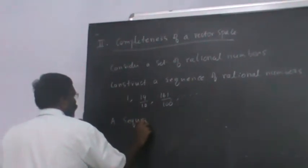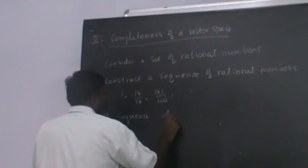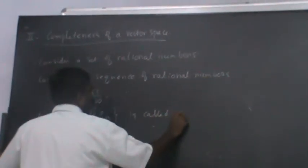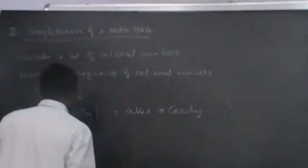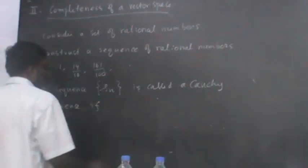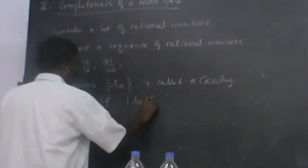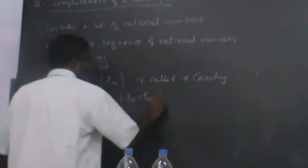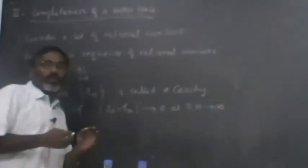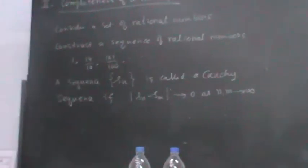Such a sequence is called a Cauchy sequence. A sequence is called a Cauchy sequence if the distance between S_M and S_N goes to zero as M and N go to infinity — they should become closer and closer. So the sequence is called a Cauchy sequence.